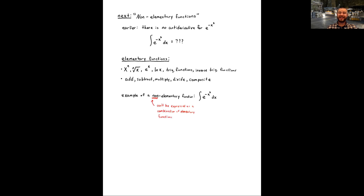There is basically no way to express the antiderivative of e to the negative x squared as a combination of elementary functions. That is what we mean when we say e to the negative x squared has no antiderivative — more precisely, it has no elementary antiderivative, one that can be expressed as these basic elementary functions or combinations thereof.